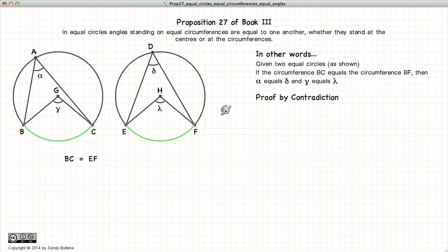Now we're going to prove this by the method of contradiction. So let's assume that gamma is larger than lambda. We will construct a line GK such that BGK is equal to EHF, or in other words, this angle here is lambda and that's lambda.